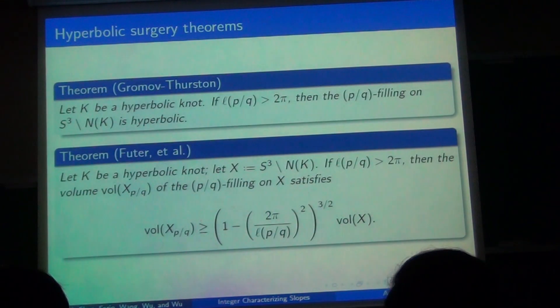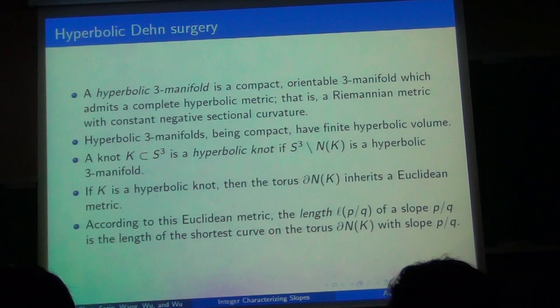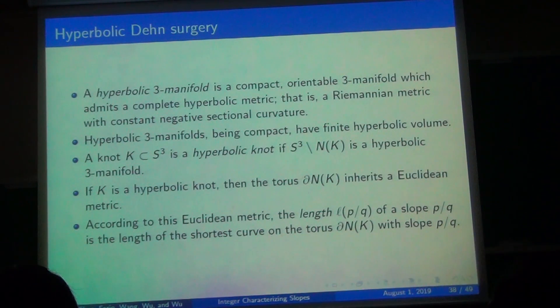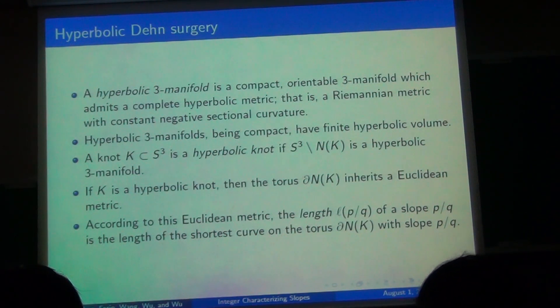So to prove the first theorem, the strategy is that we already discussed a method of going from one knot to another knot with the same n surgery. So all that remains is to show that it's actually distinct from K. And we do that using hyperbolic geometry. So a hyperbolic three-manifold is a three-manifold with constantly negative curvature. And a hyperbolic knot is any knot that if you remove the tubular neighborhood from S³, you get a hyperbolic three-manifold.